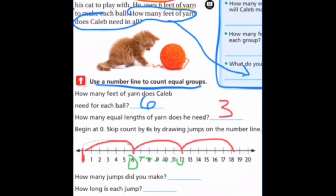Alright, let's move down a little bit further here. How many jumps did we make? We made three jumps. Actually, you know what? I'm going to delete that. There we go. Now, I'll write three in there. How long is each jump? Each jump is six. And we ended up at eighteen, so three times six is eighteen. So, Caleb needs eighteen feet of yarn.